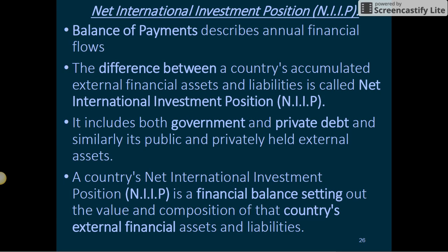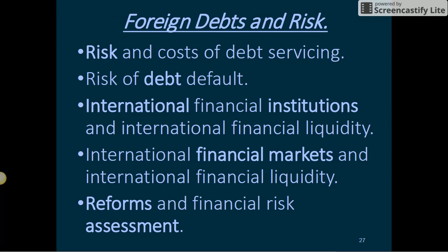While the balance of payments describes annual financial flows, the difference between a country's accumulated external financial assets and liabilities is called the Net International Investment Position (NIIP). It includes both government and private, as well as publicly and privately held external assets. A country's NIIP is a financial balance sheet setting out the value and composition of that country's external financial assets and liabilities.